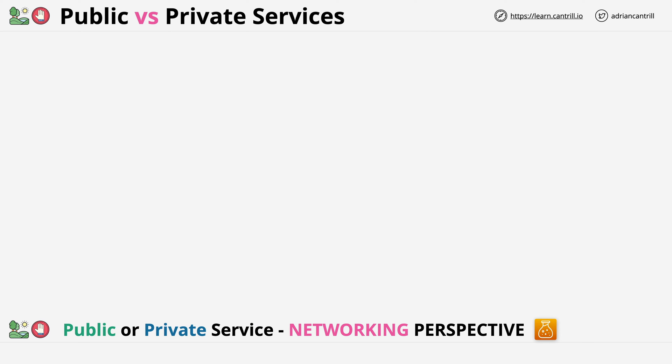A public service is something which is accessed using public endpoints, such as the Simple Storage Service known as S3 — S3 can be accessed from anywhere with an internet connection. A private AWS service is something which runs within a VPC, so only things within that VPC or connected to that VPC can access the service. For both of these, there are permissions as well as networking. Even though S3 is a public service, by default an identity other than the account root user has no authorization to access that resource.